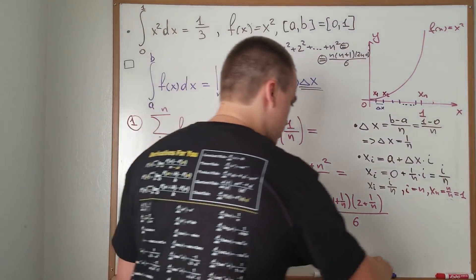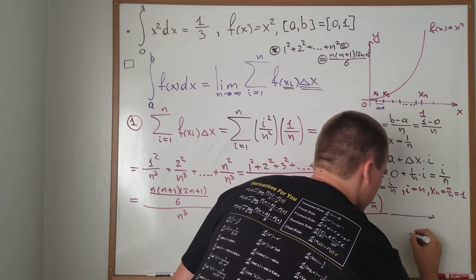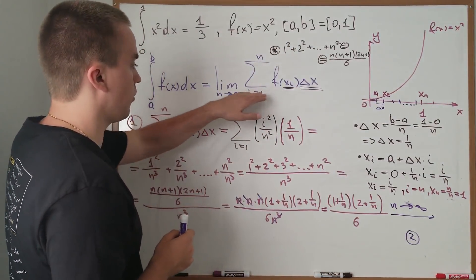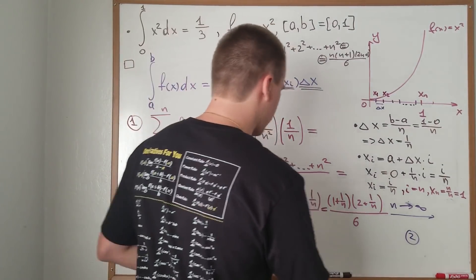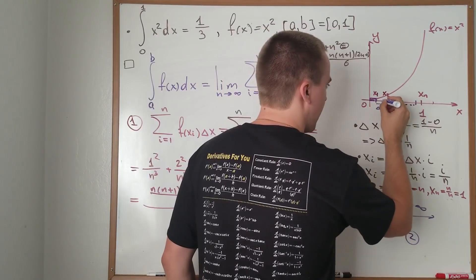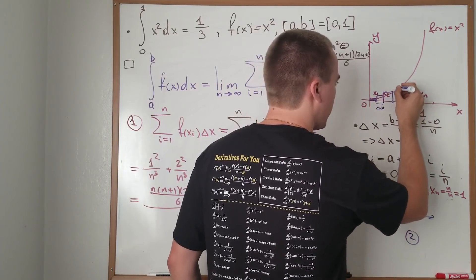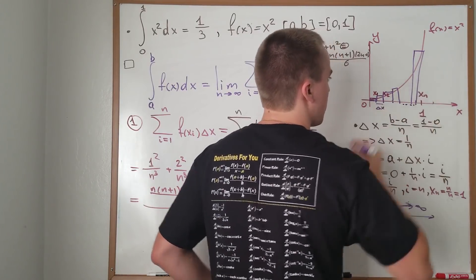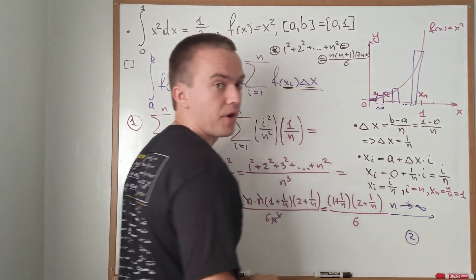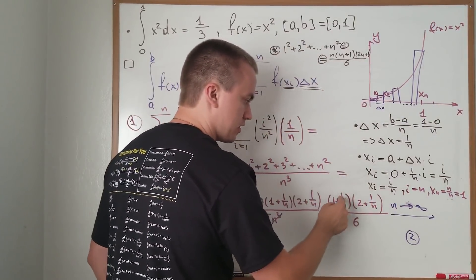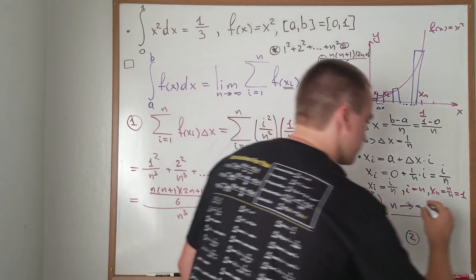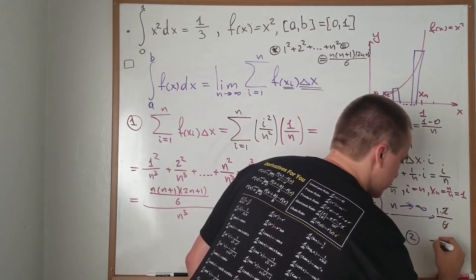For Step 2, I send n to infinity. The reason we do this is that we're approximating the area under the parabola with rectangles of base Δx and height f(xᵢ), and as n → ∞ the rectangles perfectly fill the area. As n → ∞, the term 1/n goes to zero, so (1 + 1/n) → 1 and (2 + 1/n) → 2. We're left with 1·2/6, which simplifies to 1/3 — exactly the value of the definite integral.